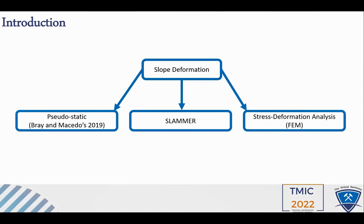Then we used Bray and Macedo's 2019 empirical equations to estimate the displacement at the crest of the slope. This method is a function of yield acceleration, moment magnitude of the articulated acceleration time history, and fundamental period of the failing mass.